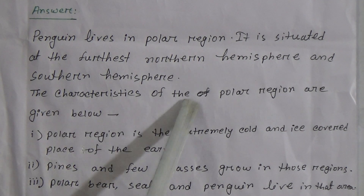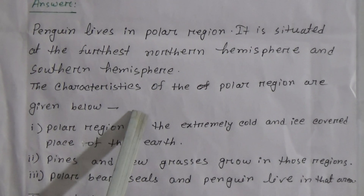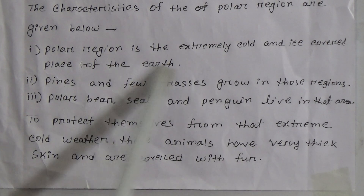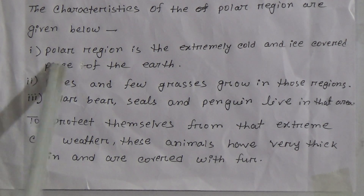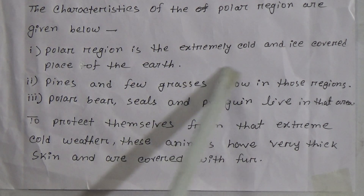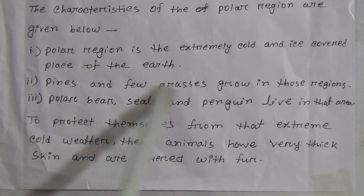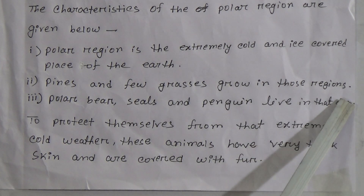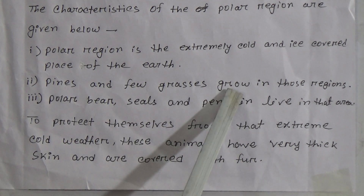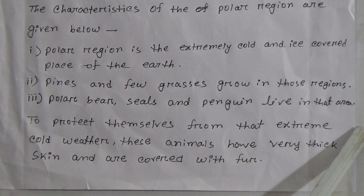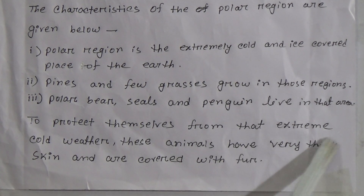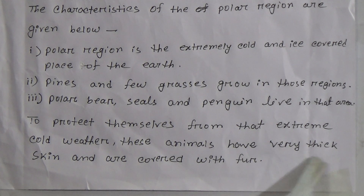The characteristics of the polar region are: Number one — the polar region is an extremely cold and ice-covered place of the earth. Number two — pines and few grasses grow in this region. Number three — polar bears, seals, and penguins live in that area. To protect themselves from the extreme cold weather, these animals have very thick skin and are covered with fur.